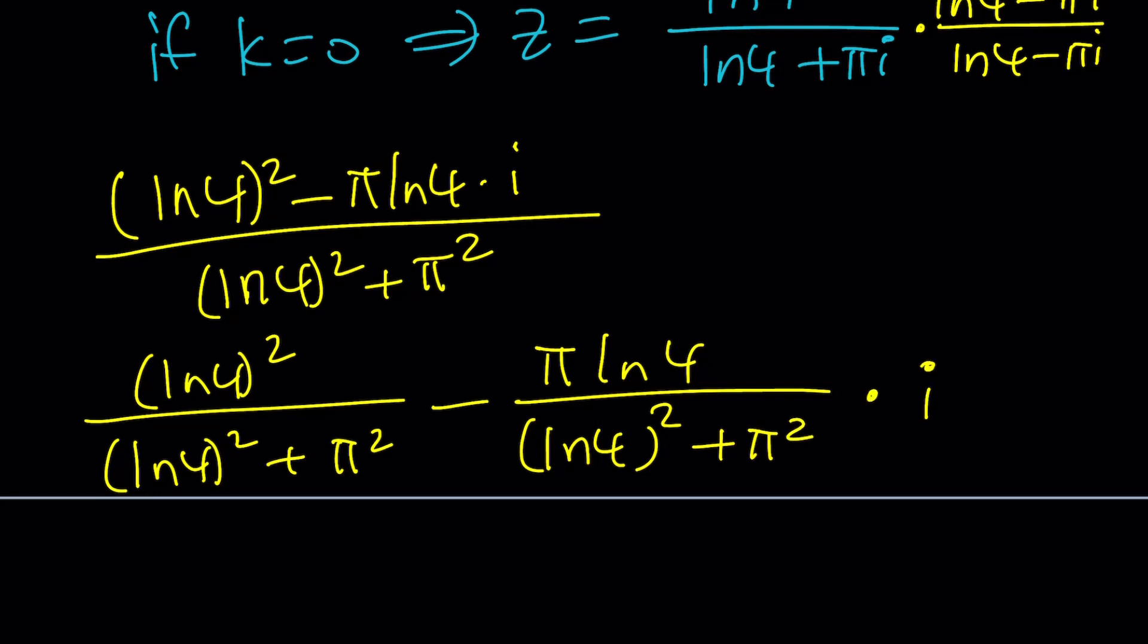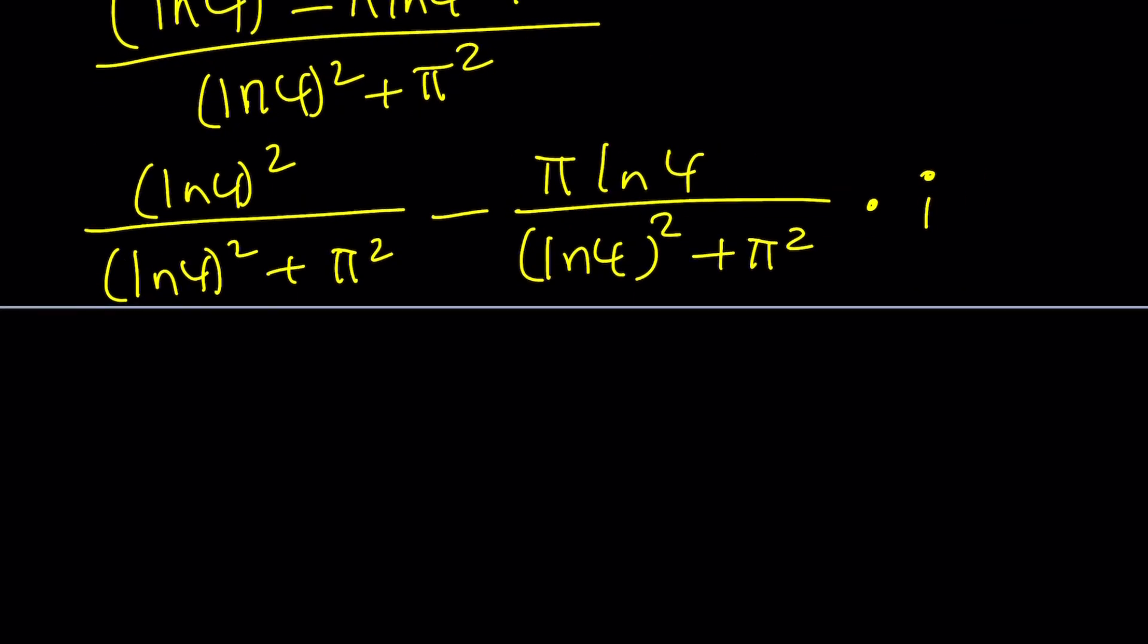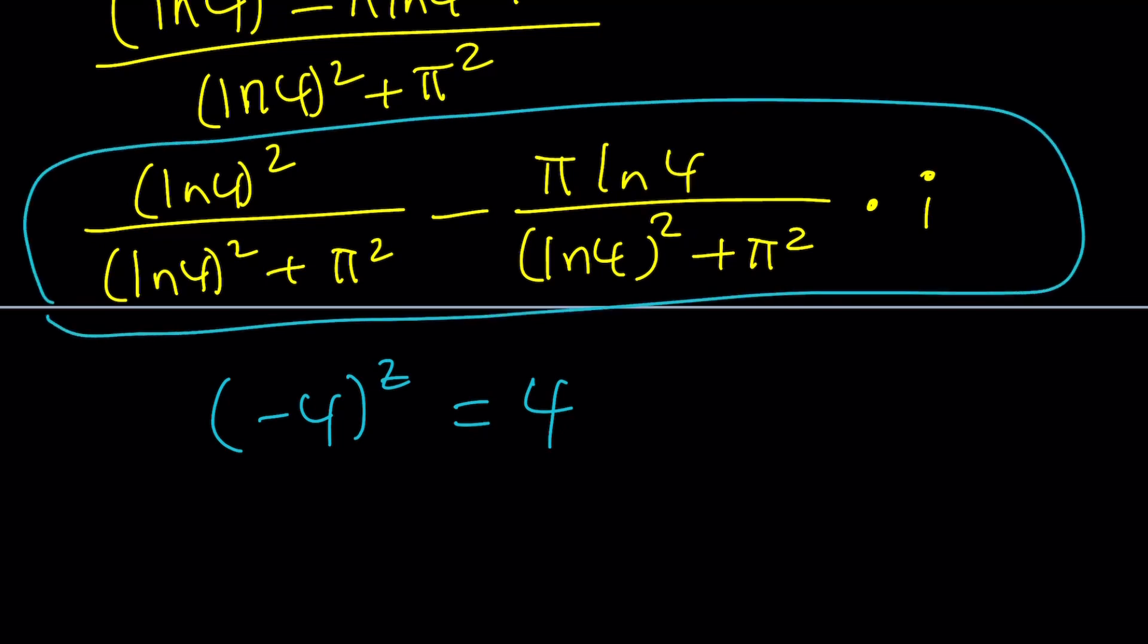So, a real number would not satisfy this equation. Negative 4 to the power of z equals 4. But a non-real complex number like this one would satisfy. And if you want to plug it in and test it out, be my guest. It's going to take a while, but you can do it.